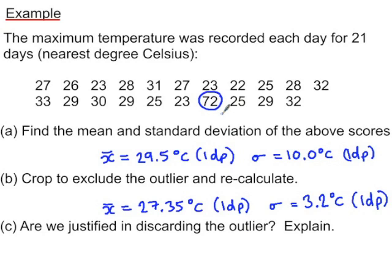Just because we have a particularly high number, is it appropriate to crop this 72 from the data? Think about why there might be this value of 72 and why it might or might not be appropriate to include it. Also, what has happened to the standard deviation, and can you explain it in terms of the way that we have cropped this data? Pause the video and write down your answers to these questions.